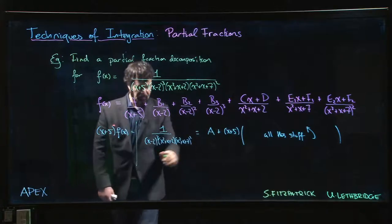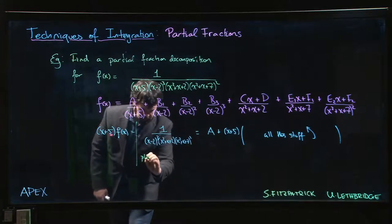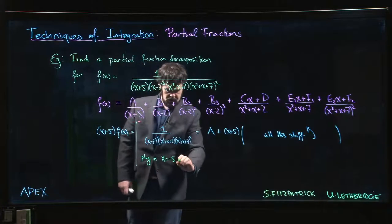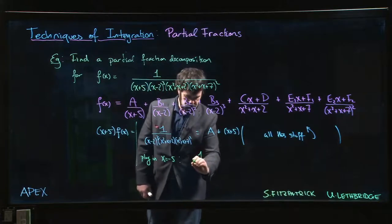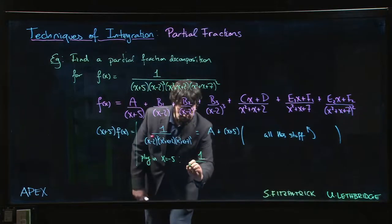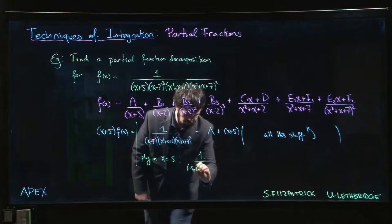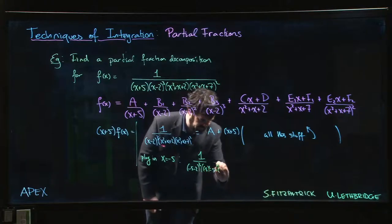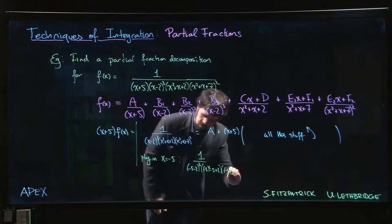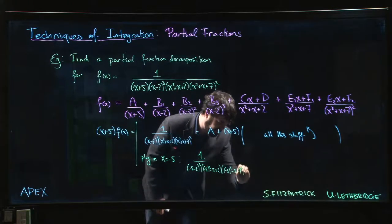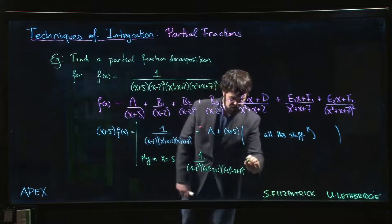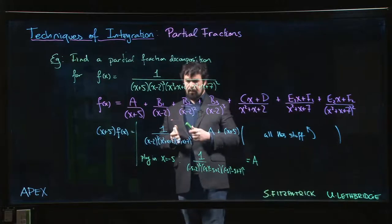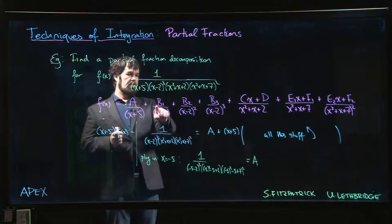Well, then what I get is one over minus 5 minus 2 cubed times minus 5 squared minus 5 plus 2, minus 5 squared minus 5 plus 7, all squared. And you know that's equal to A. So now at least I know the value of A. Right, for B1, B2, B3, there are similar tricks that work, except you know if we just multiply by x minus 2, you notice that that's maybe not quite good enough because if I multiply by x minus 2, there's still x minus 2 in the denominator there.